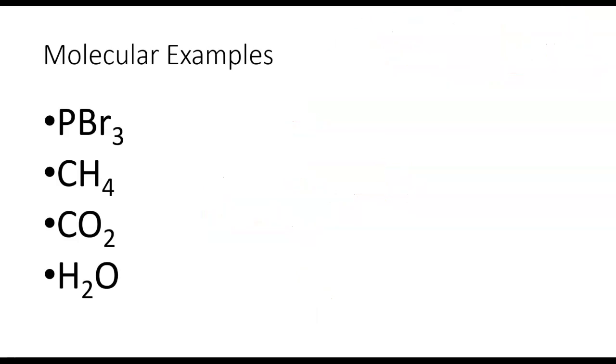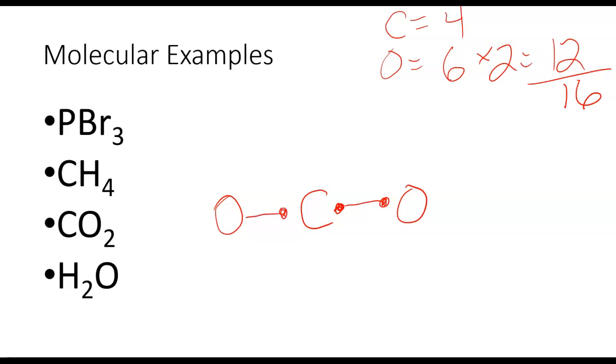Let's take a look at the CO2 example. I've got my carbon, I've got 2 oxygens, carbon is 4 valence electrons, oxygen has 6 times 2, so I have 12 from my oxygens, 4 from my carbons, I need to have 16 in my final structure. So I'm going to go through the same steps, attach my carbon to my oxygen.